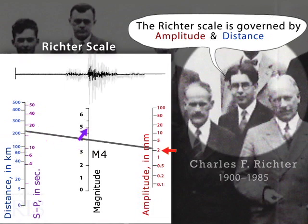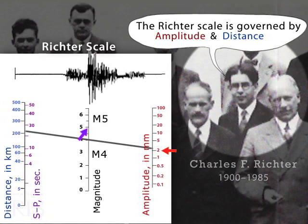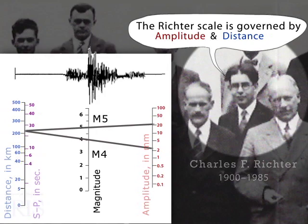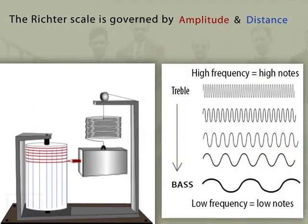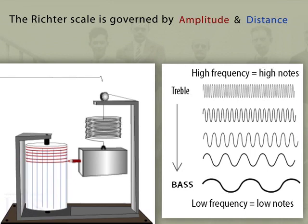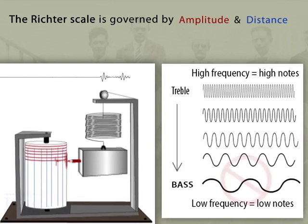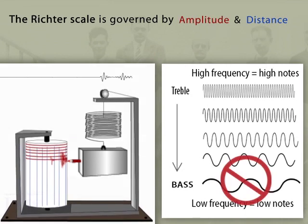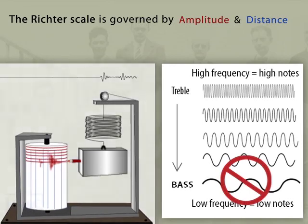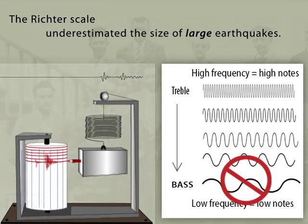The scale is logarithmic, so a one unit increase in magnitude corresponds to ten times larger amplitude. The limitation was that seismologists measured certain frequencies, which meant that the signals from large earthquakes weren't adequately represented — like not being able to hear the bass notes on your laptop speaker. That meant that the Richter scale underestimated the size of large earthquakes.